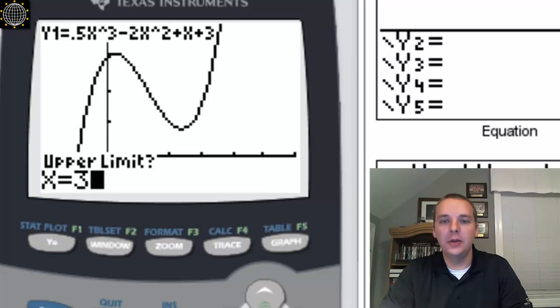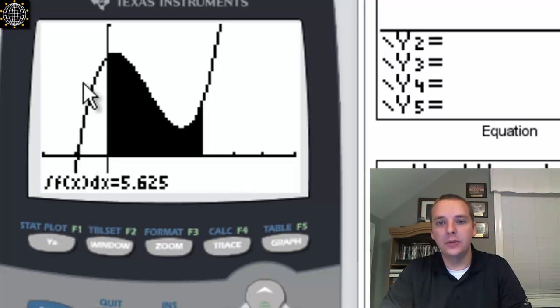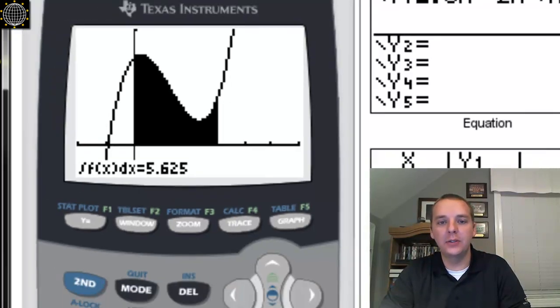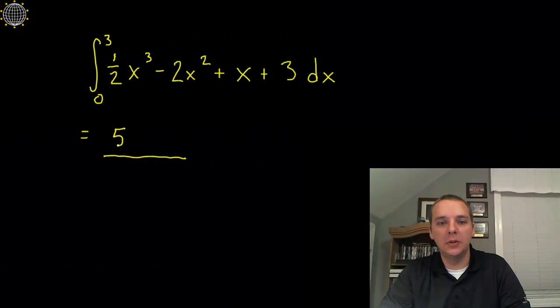And it will graph it. Alright, so it'll show us that shaded area as well as tell us the area exactly, not an approximation but exactly, under that curve is 5.625, 5.625. So we'll go ahead and jot that answer down and that's pretty much it.